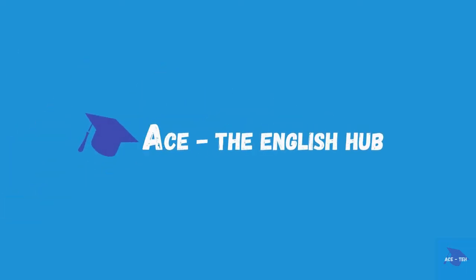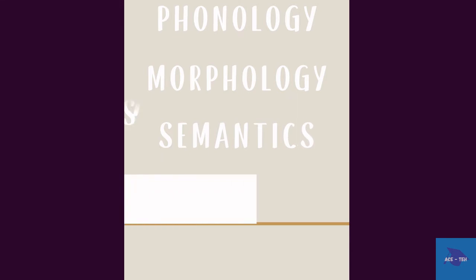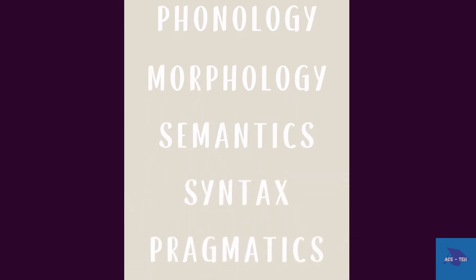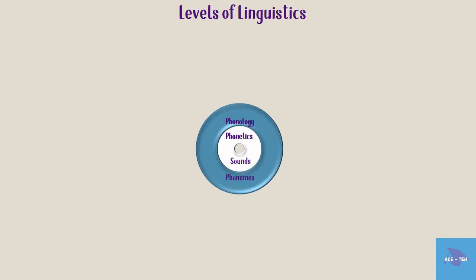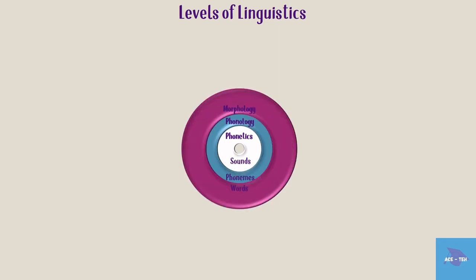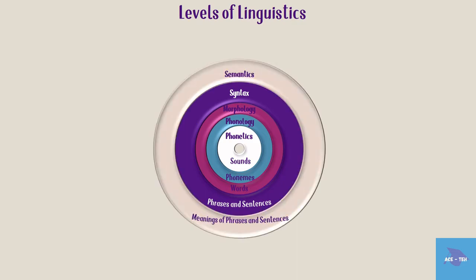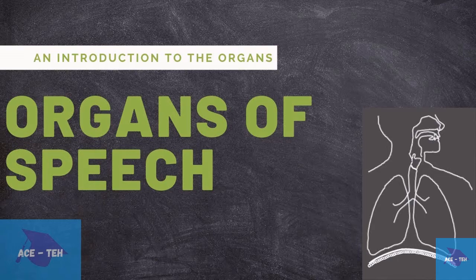Hello and welcome to Ease the English Hub. We have been dealing with the topic of linguistics and phonetics. We saw that linguistics covers five major areas: phonology, morphology, semantics, syntax, and pragmatics. We can also say that these five are the levels of linguistic study. We have already finished phonology and morphology, and covered a few aspects of phonetics including the organs of speech. A detailed study of the speech sounds will soon follow.